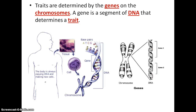Traits are determined by genes that are located on chromosomes. A gene is just a segment of DNA that determines a trait. In each and every one of your chromosomes, you have multiple genes that code for many different traits.